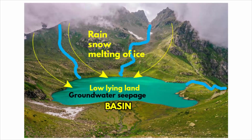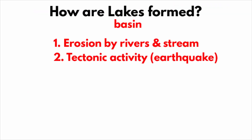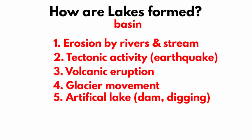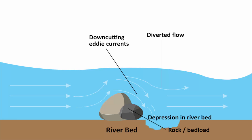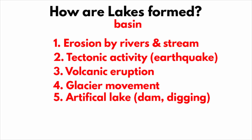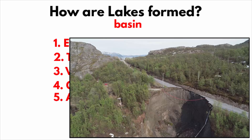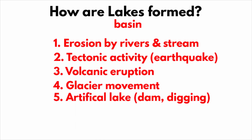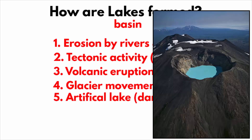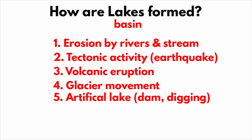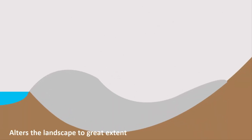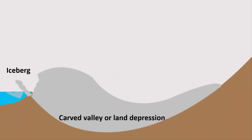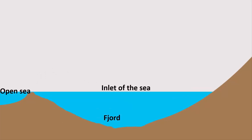Lakes are basically basins, formed by constant erosion processes of rivers and streams. When rivers continuously flow at a particular region, they carry away a lot of sediment, which creates a land depression or basin. Lakes are also formed due to tectonic activity like earthquakes, which can trigger a landslide that creates a low land. Many lakes are also formed because of volcanoes — after a volcano becomes inactive, its crater fills with rain or melted snow. Even glacial activity can contribute to the formation of a lake, as glaciers carve the landscape with their slow movement, which then gets filled up with water from seas and rivers.